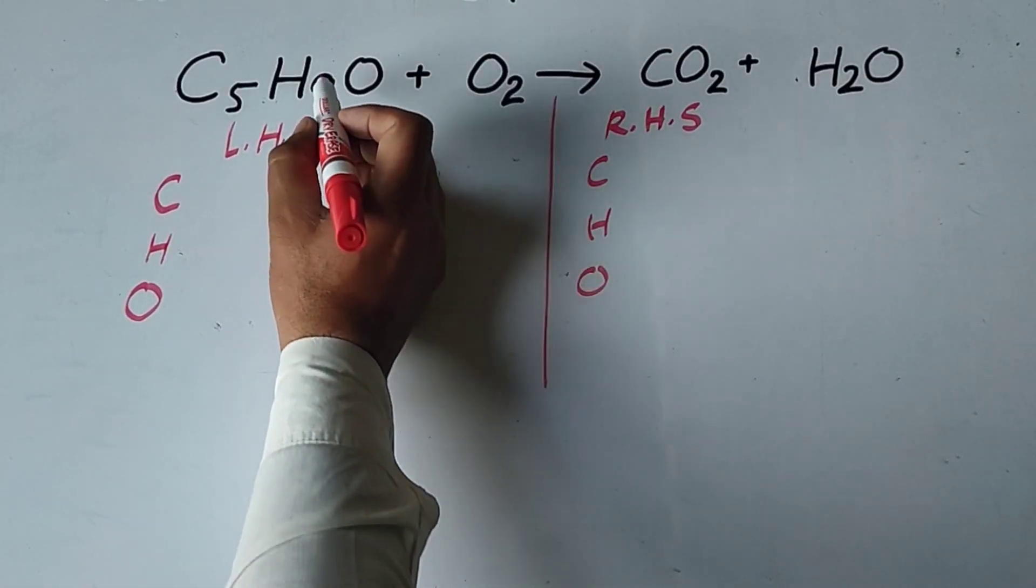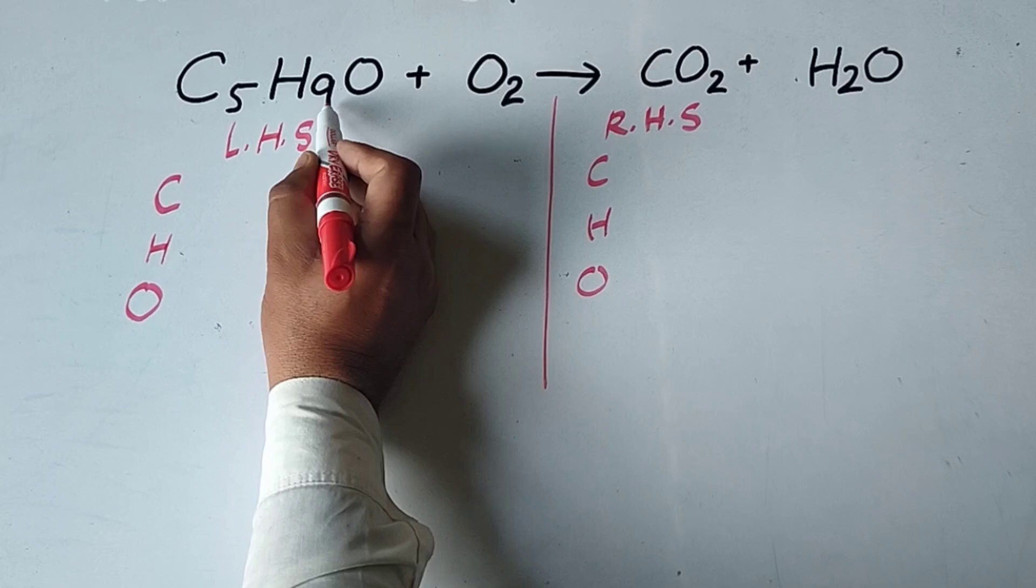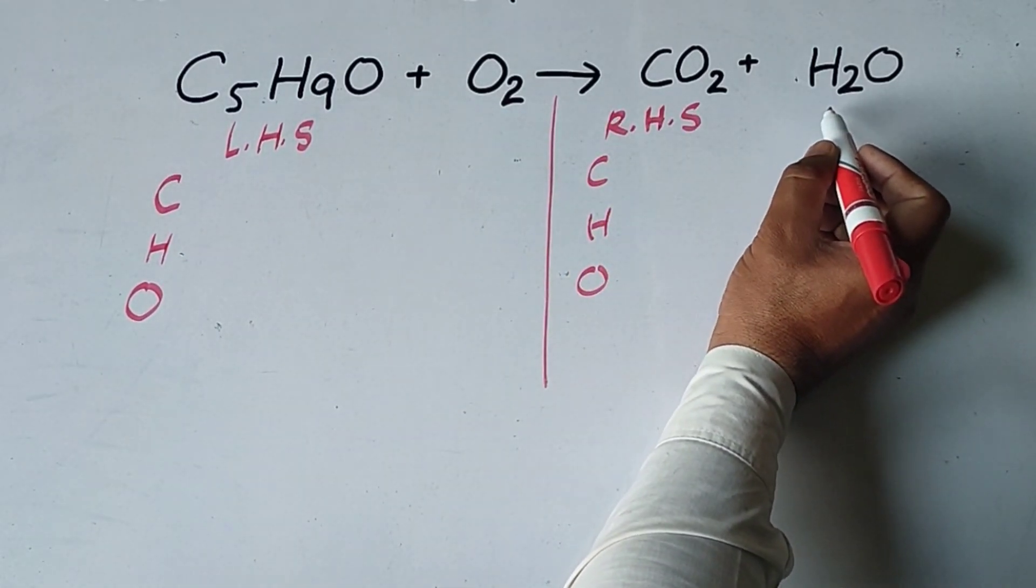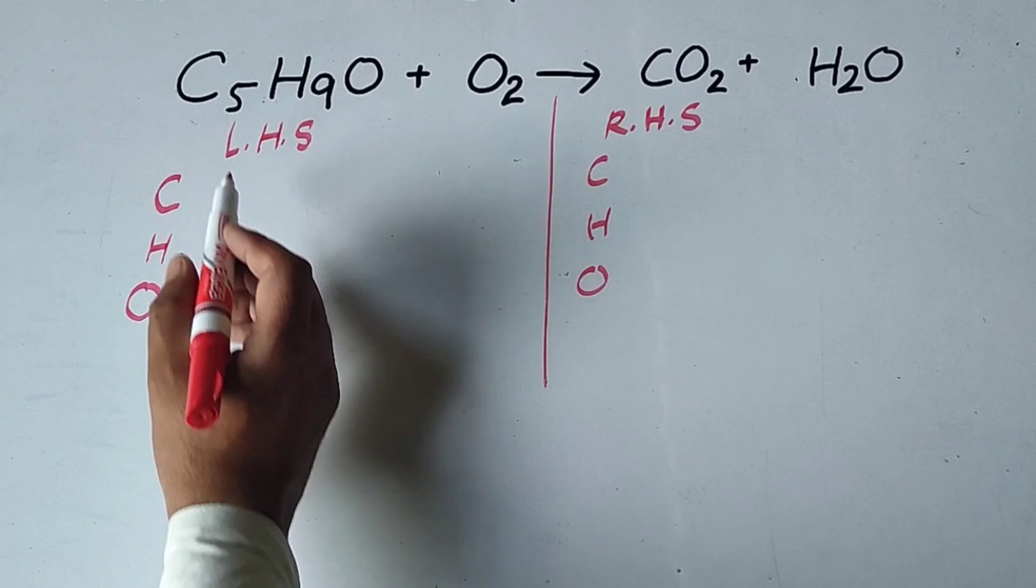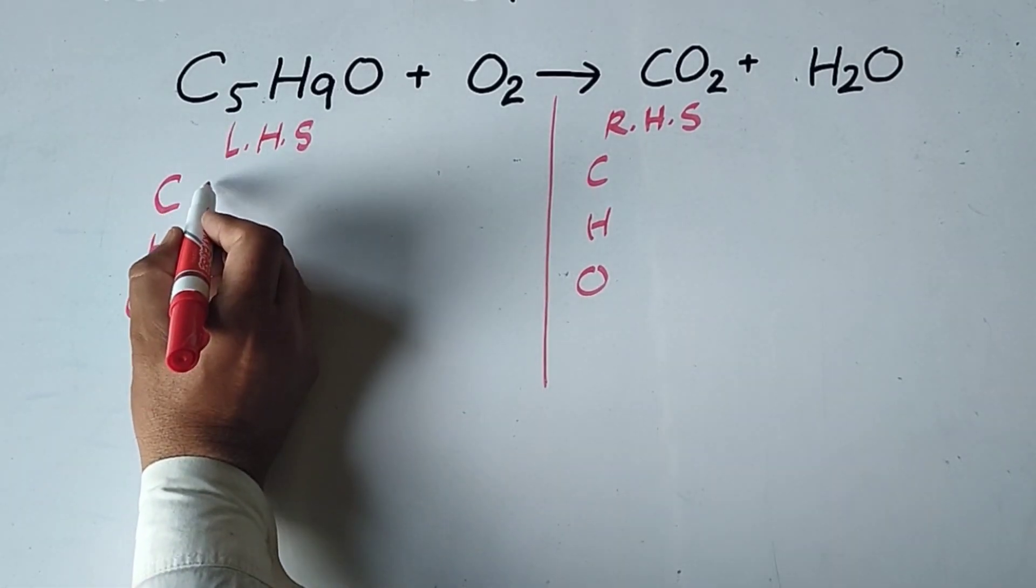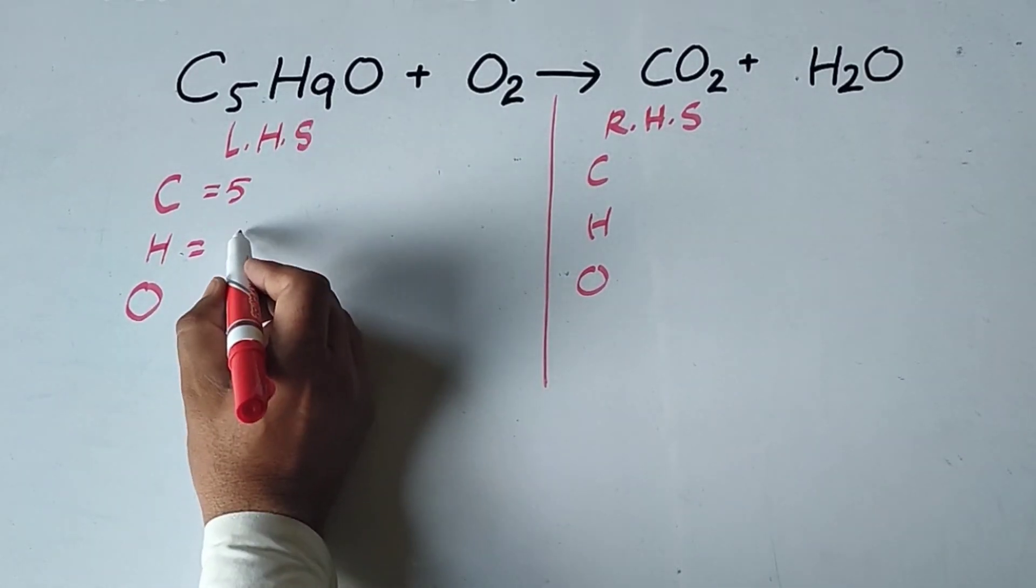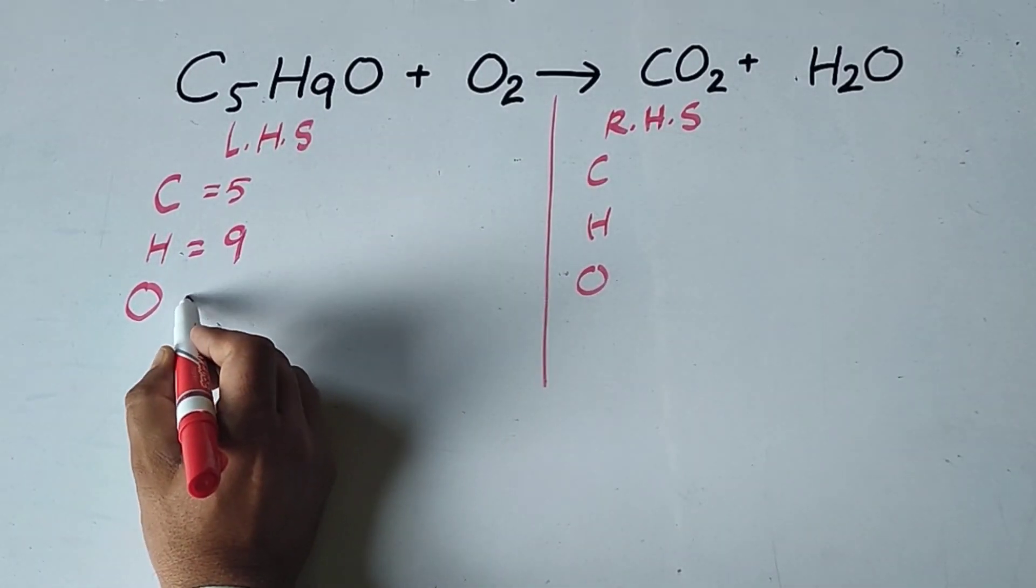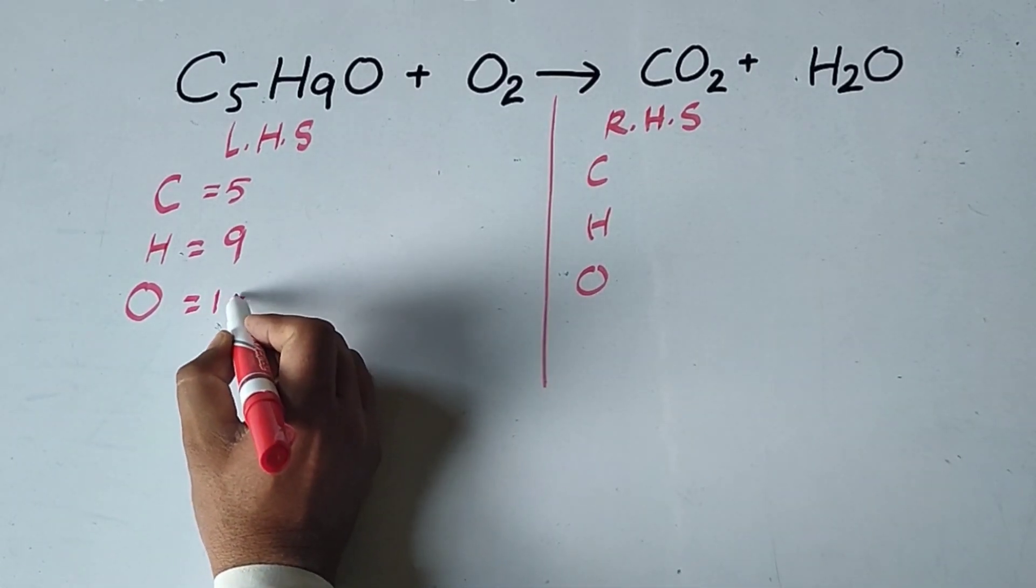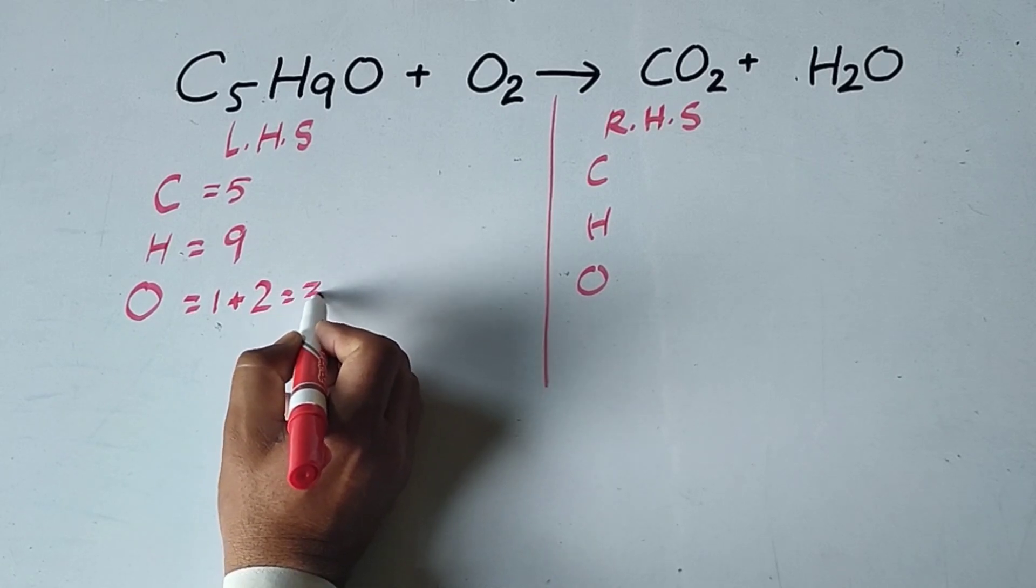How to balance this chemical equation in which C5H9O reacts with oxygen and forms carbon dioxide and water. We write the number of atoms on the left-hand side. Carbon atoms 5, hydrogen atoms 9, oxygen atoms: there is one oxygen here and two oxygen here, total 3 oxygen atoms.